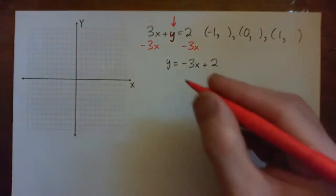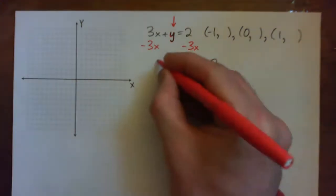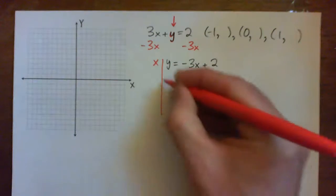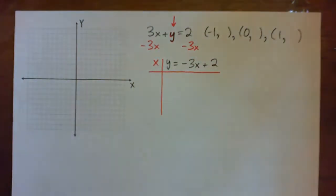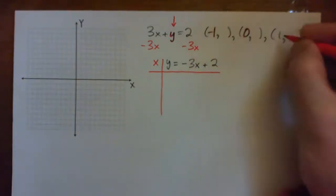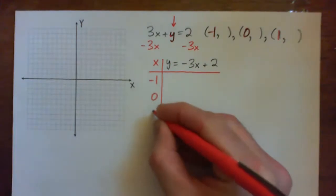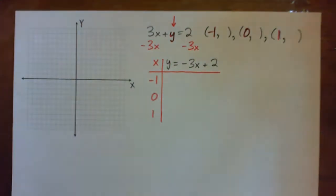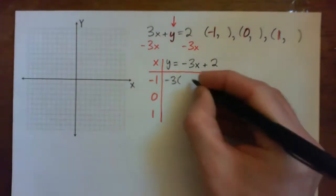And now we can make a little table like this, and we can plug in some points to graph the line. I'm going to plug in what they gave us here: negative 1, 0, and 1. I'm going to use those points to find y values.